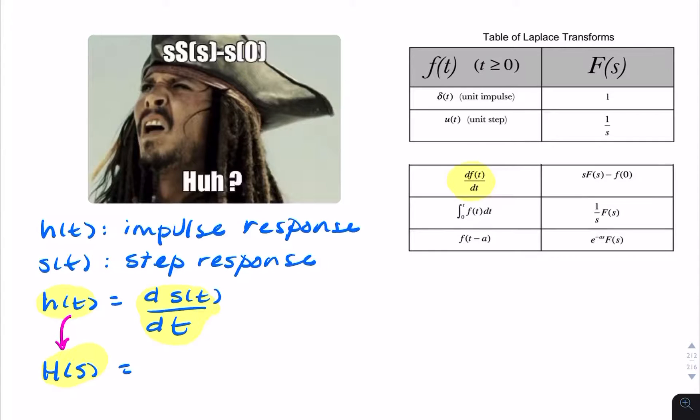And here we have the Laplace transform of a derivative. So what we want is s f(s) minus the initial value f(0). So it would simply be s.